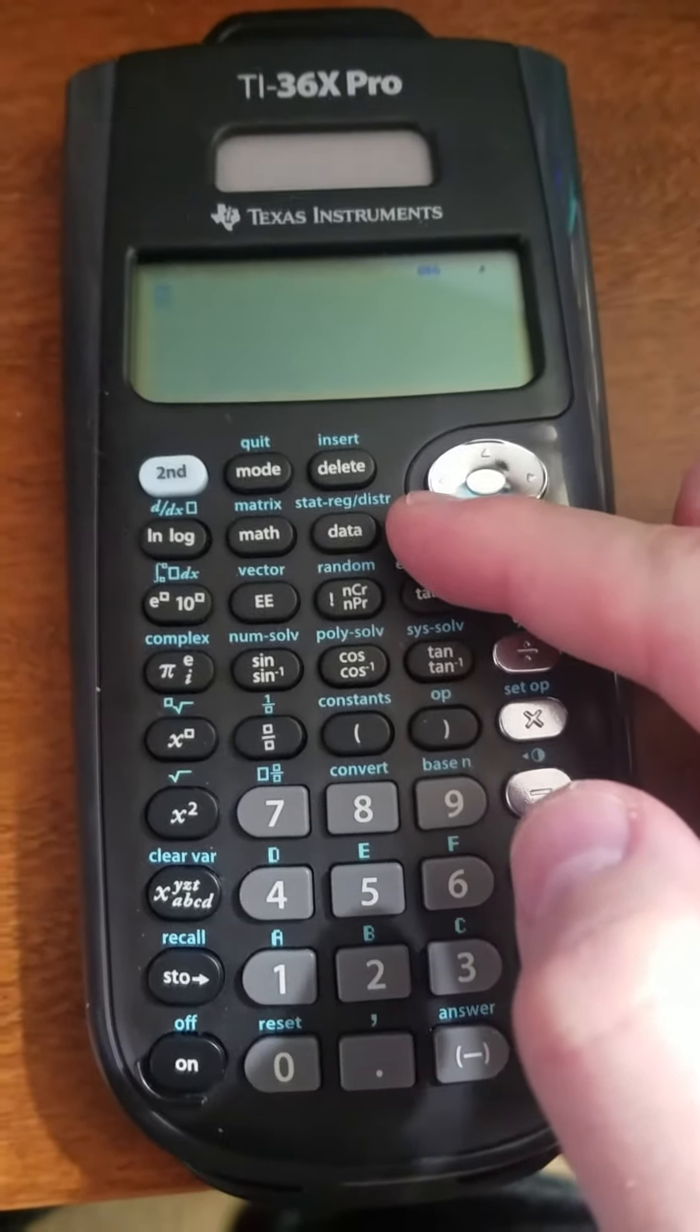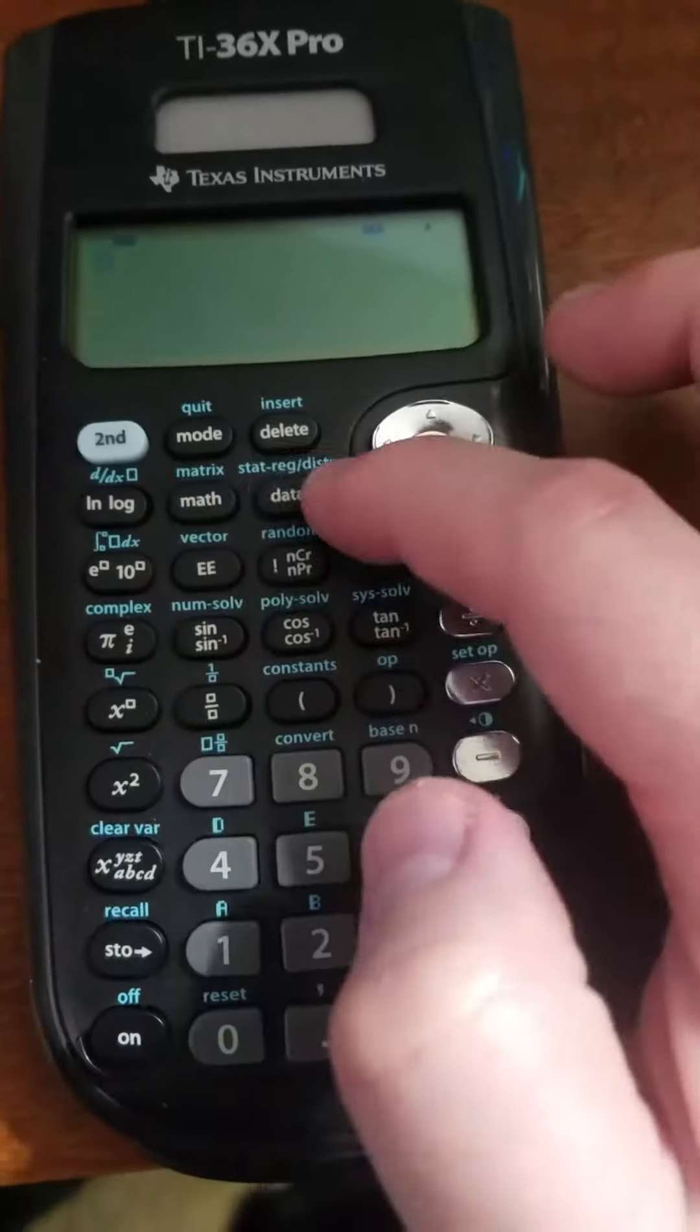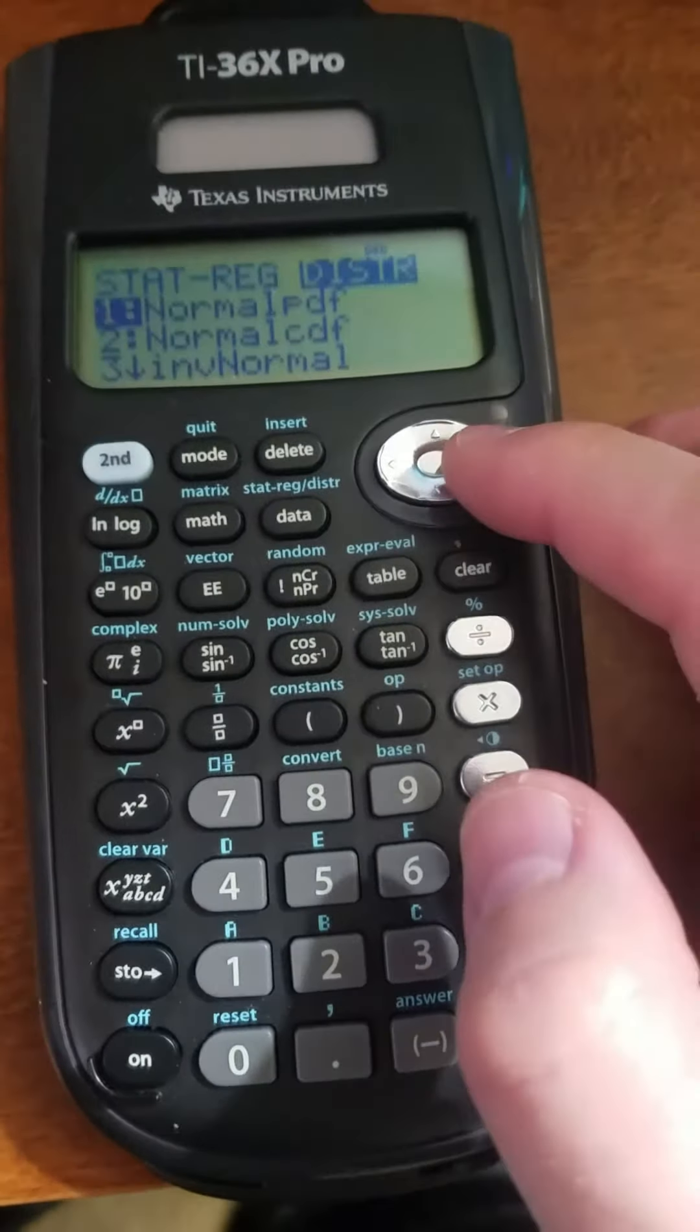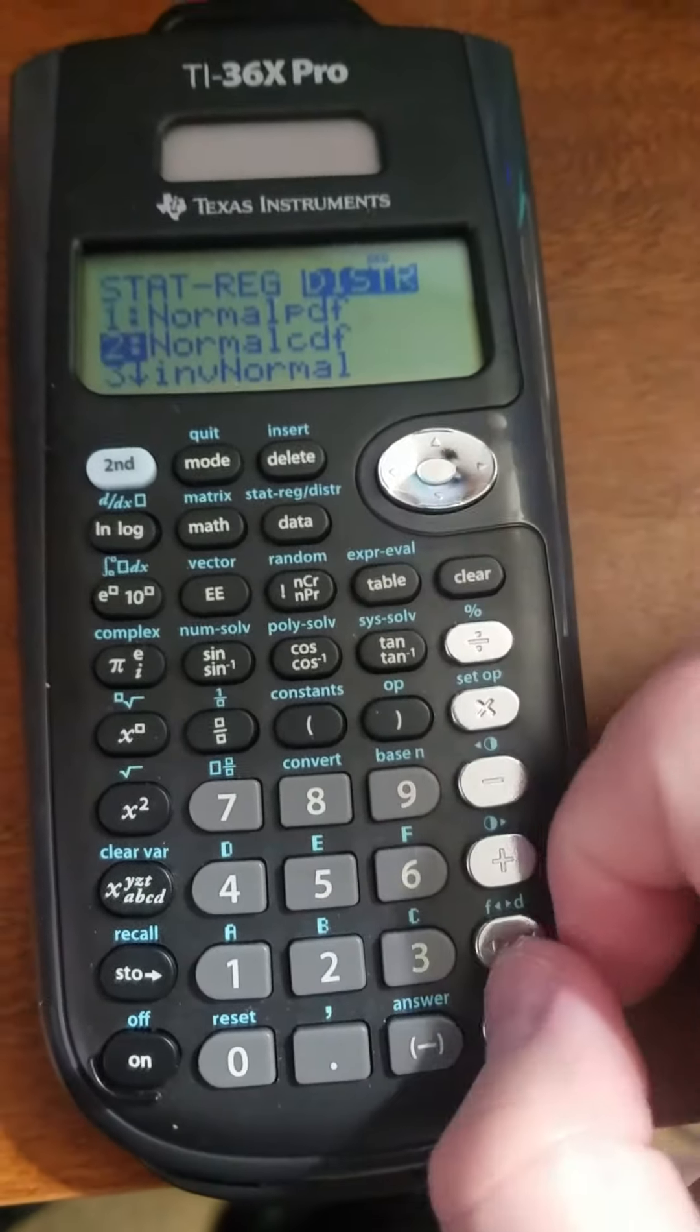It's going to be in the distributions menu, which you can see is in blue right there, so I'll press second and then that button. Distributions and normal CDF is right here.